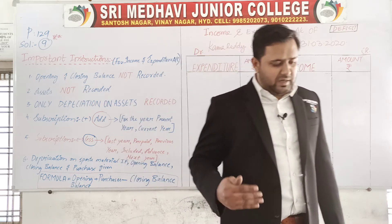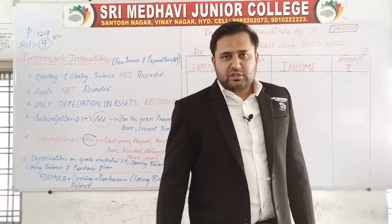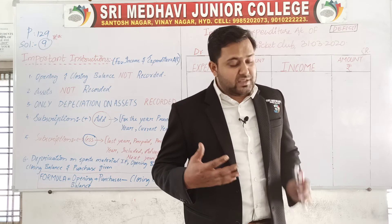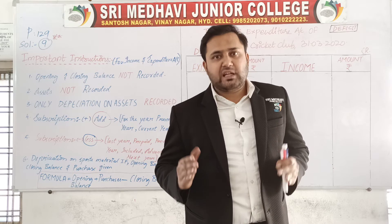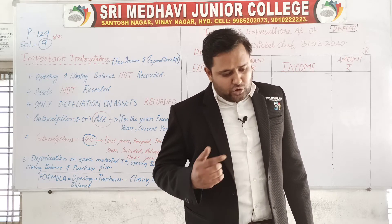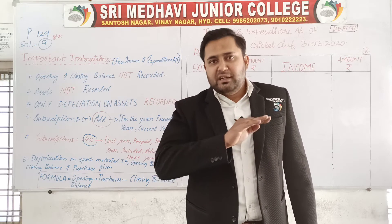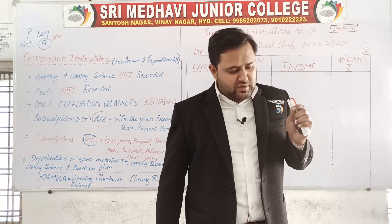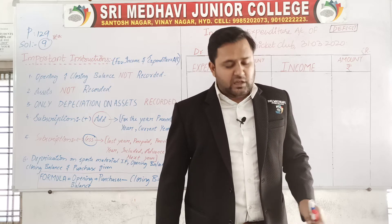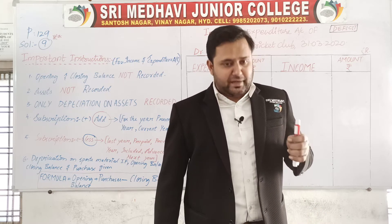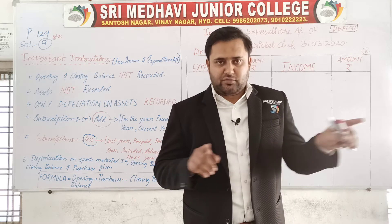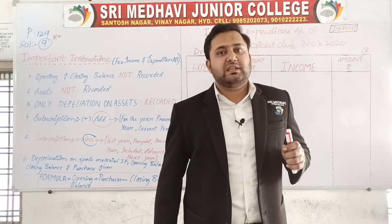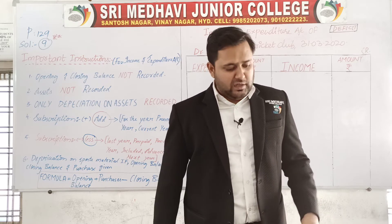On the receipt side, we have: opening balance — do not record it. Subscription, and tournament fund is given. As soon as you see tournament fund on the receipt side, check the payment side for tournament expenses — and yes, tournament expenses is also mentioned there. So eliminate both: cut off tournament fund and tournament expenses. Other receipt items are: legacies, entrance fee, donation for ground, and sale of grass. On the payment side: salaries, ground moving machine, rent, general expenses, tournament expenses (already eliminated), office expenses, purchase of sports material, and closing balance — which you should not write.